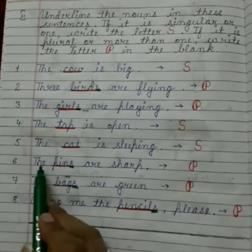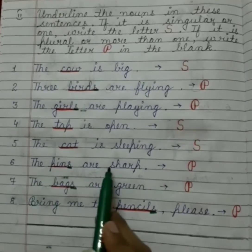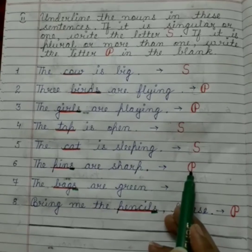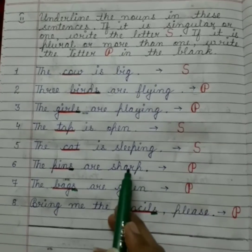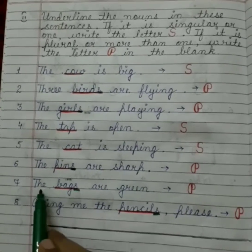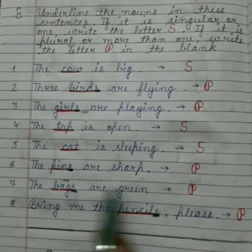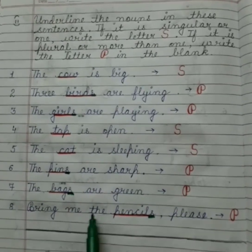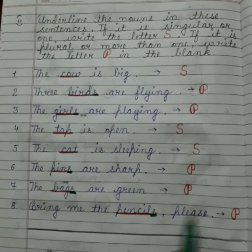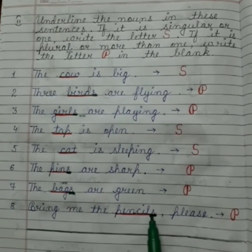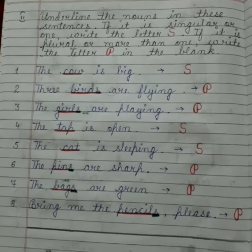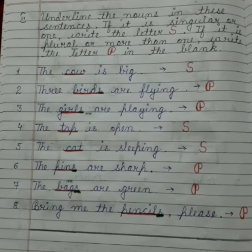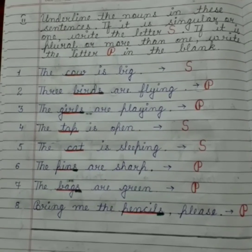The pins are sharp — plural, toh P likhenge. Sharp means noka tika. The bags are green — plural, toh P likhenge. Bring me the pencils please — pencils plural hai, toh P likhenge. I hope you all understand this chapter. Okay, bye for now. Take care.